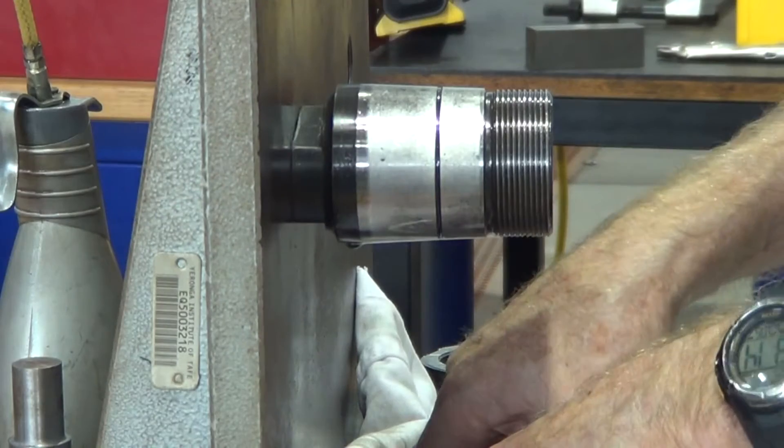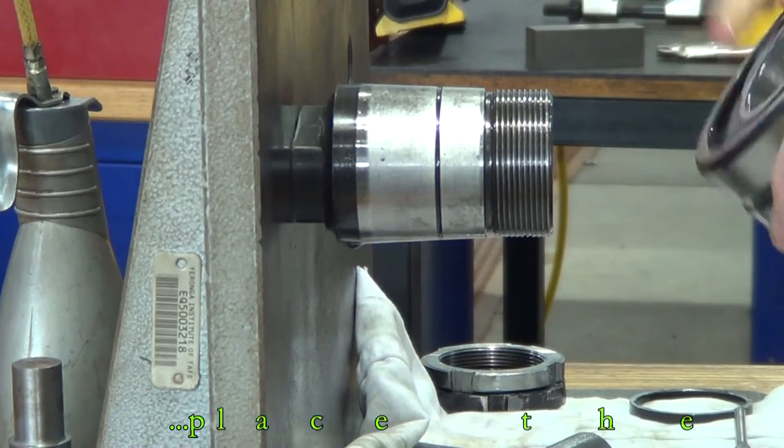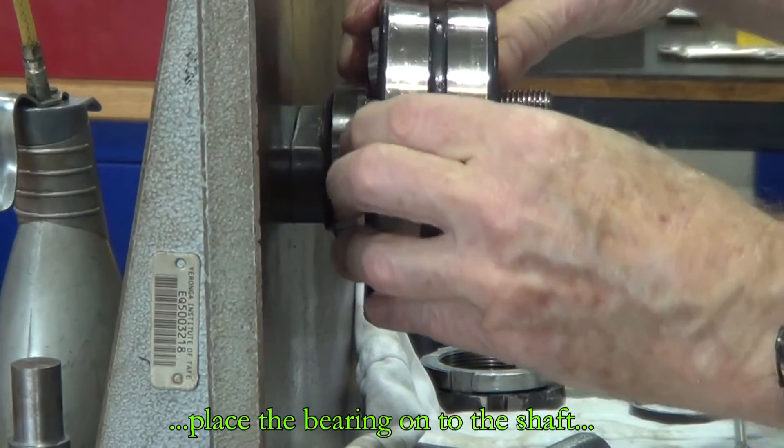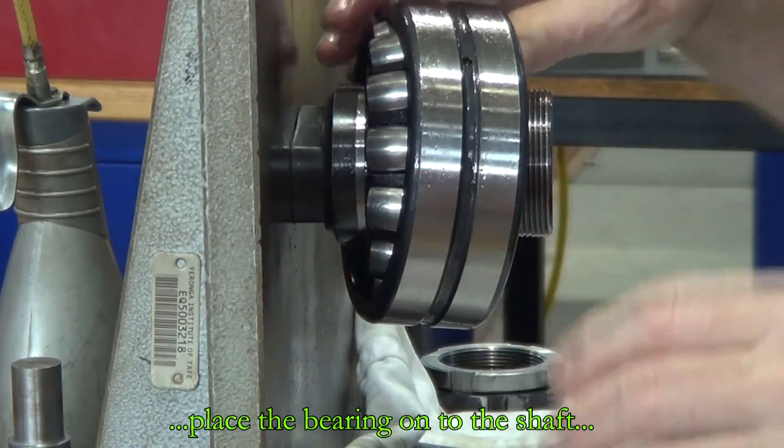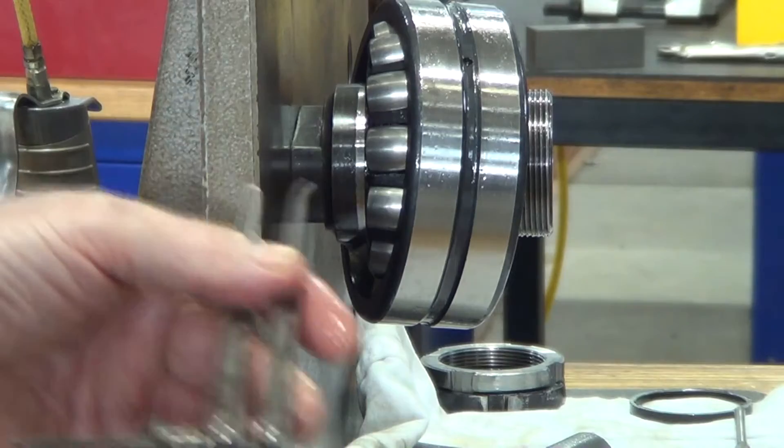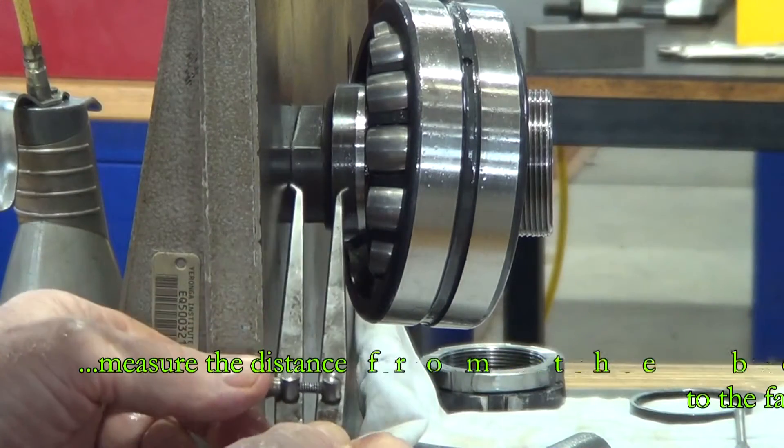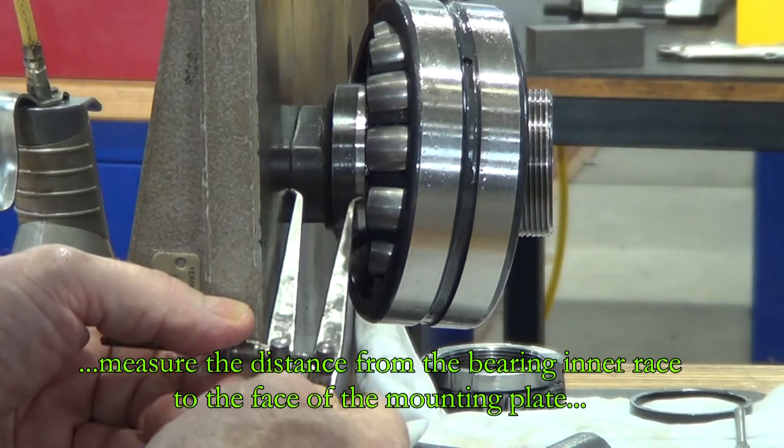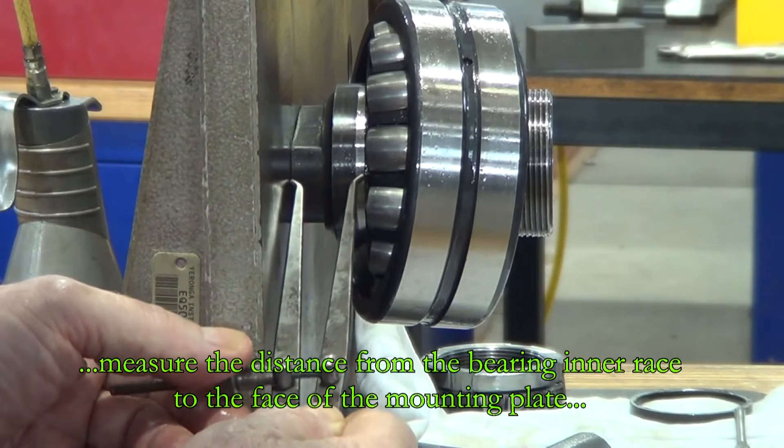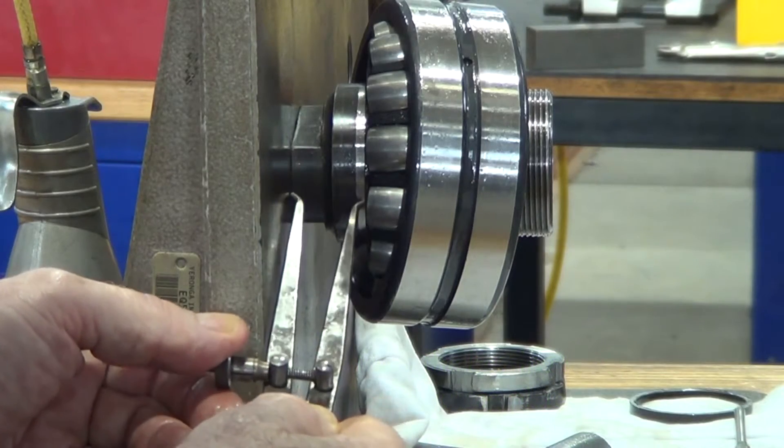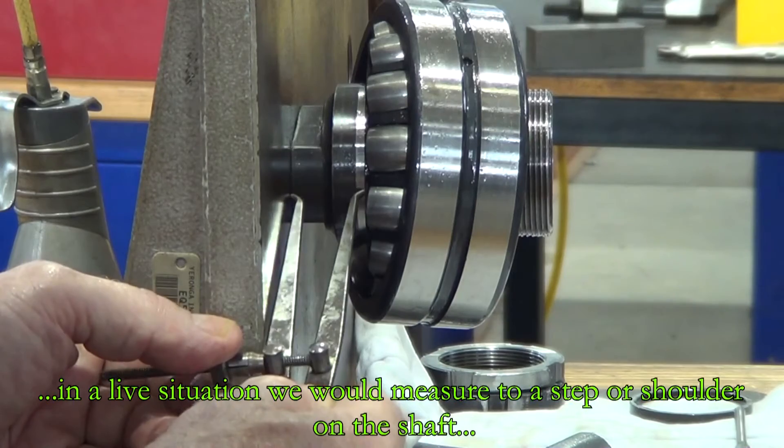So here what we're going to do is position the bearing onto the shaft. Then what we do is we take a measurement from the inner race, in this case to the fitting plate that we're using there, as you can see with the dividers. If we were doing it on a live piece of machinery, we would probably be taking the measurement from the inner race to a shoulder or something like that on the shaft.